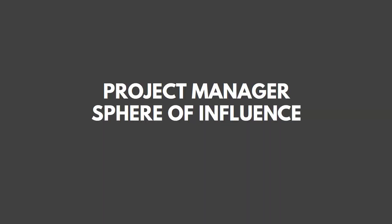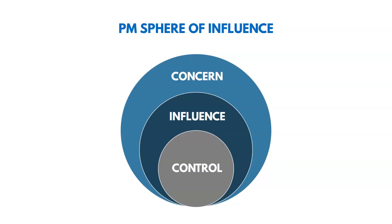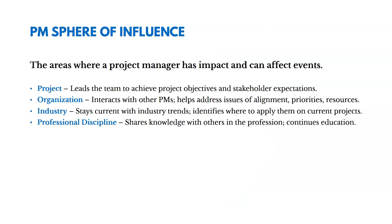Another topic in this chapter is the project manager's sphere of influence. Project managers can influence things not just on their project but outside of it as well. There are things an individual can control, things they can influence, and even larger concerns beyond that. First, they have influence on their project — they lead the team to achieve the project's objectives and stakeholder expectations, and in many cases have direct control over the project.